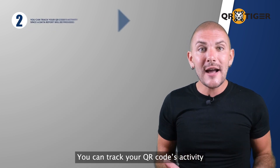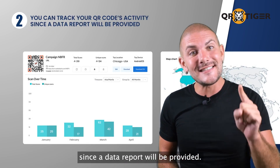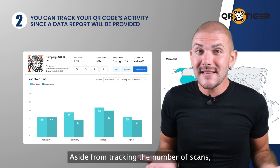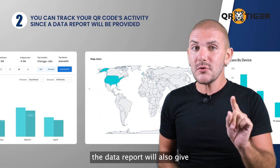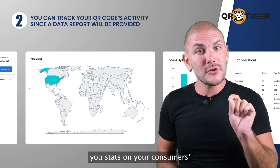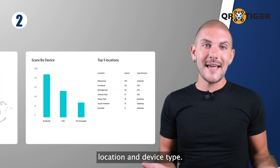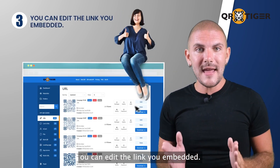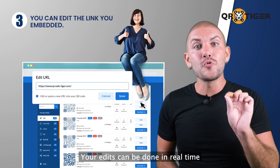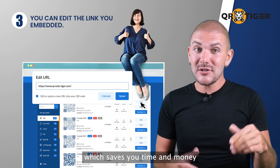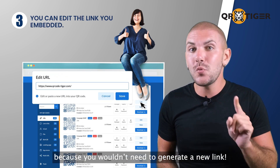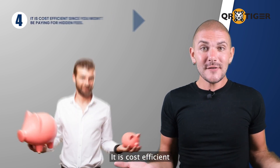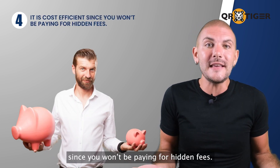Second, you can track your QR code's activity since a data report will be provided. Aside from tracking the number of scans, the data report will also give you stats on your consumer's location and device type. Third, you can edit the link you embedded in real time, which saves you time and money because you wouldn't need to generate a new link. Fourth, it's cost-efficient since you won't be paying for hidden fees — all you need is a subscription to keep your page active.